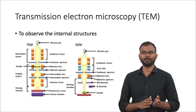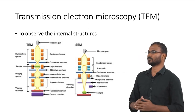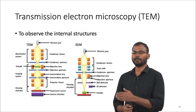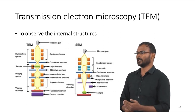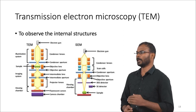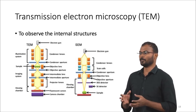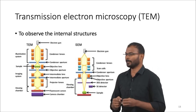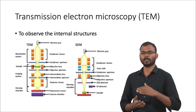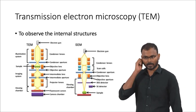TEM works on a similar principle to SEM, but the electron beam is transmitted through the sample — that is why it is called transmission electron microscopy. In SEM the sample is at the bottom and images are formed from reflected electrons, but in TEM the sample is at the center and the electron beam passes through it, revealing what is present inside the material. For porous structures the electrons pass freely; for compact materials the transmission varies based on the material's density, and based on that the image is observed.